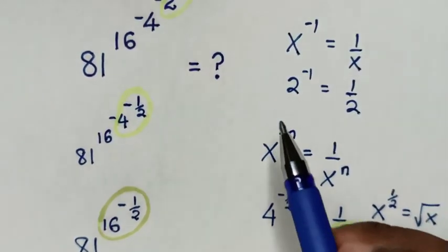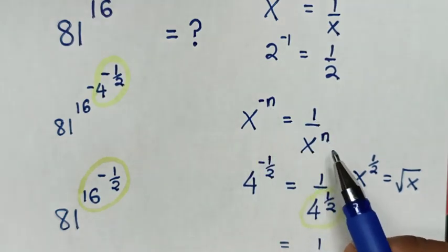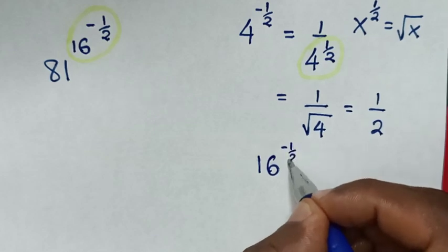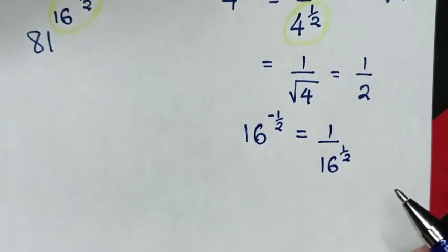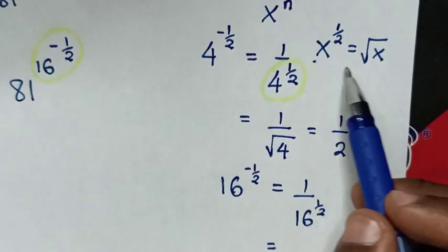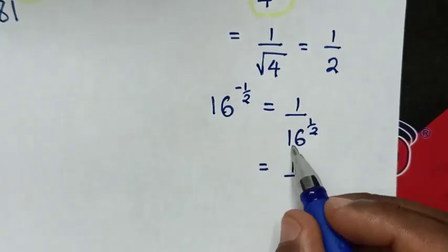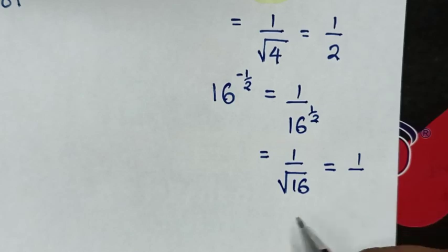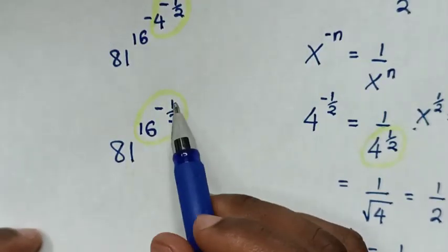So we'll apply this rule: x power of negative n is equal to 1 over x power of n. So from 16 power of negative a half, it is equal to 1 over 16 power of a half. Then it will be equal to — from here 16 power of a half, we'll apply the rule that x power of a half is equal to square root of x. So it will be 1 over square root of 16, which is equal to 1 over 4. So we'll substitute 1 over 4 into 16 power of negative a half.